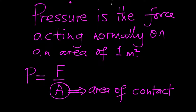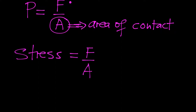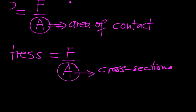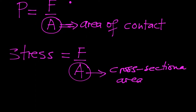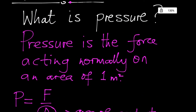Also remember there is another physical quantity with the same expression: stress. Don't confuse the two. Stress is also force over area, but for stress, the area is the cross-sectional area, not the area of contact. Tensile stress is defined as the ratio of the tensile force to the cross-sectional area of a material, covered under mechanical properties of matter. Pressure, in simple terms, remains the force acting normally on an area of one meter squared.